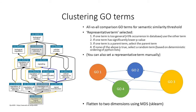Eventually this leads to one GO term representing the function of each group of GO terms. These representative GO terms are then used to calculate the semantic similarity distances between all the groups. Finally, this matrix of distances between groups is reduced to two dimensions using scikit-learn's multi-dimensional scaling, which represents our x and y axes.